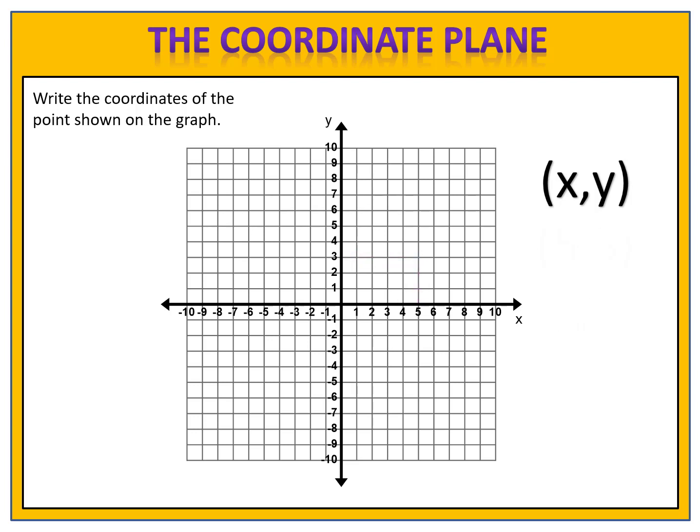Now let's try a few more points. Can we write the coordinates of this point? Please pause the video and see if you can write the coordinates. We begin by looking at the x-axis — the point is above the 8 on the x, so the x value is 8. We now look at the y-axis — the point is at the level 2. The x is 8, the y is 2, so the coordinates of the point are 8 comma 2.